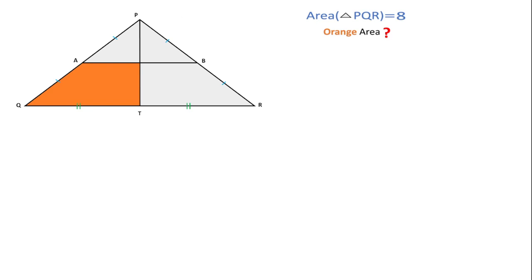Welcome to Definite Mind. In this question there is an isosceles triangle PQR with equal sides PQ and PR, and area of this isosceles triangle PQR is 8 square units. A and B are the midpoints of PQ and PR. Then we have to find this orange area.